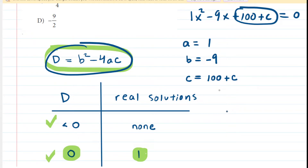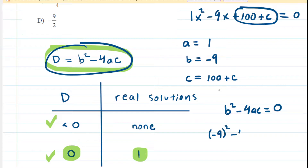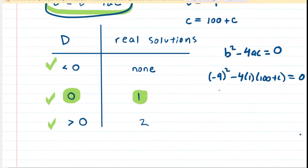We take advantage of the fact that the discriminant b squared minus 4ac equals zero, and plug in the values. For b, we put in negative nine. For a, we put in one. For c, we put in 100 plus c. Then we solve for c. Negative nine squared is 81. We subtract 81 from both sides of the equation to cancel it out.